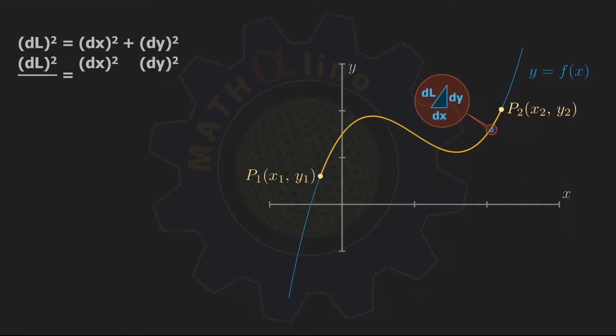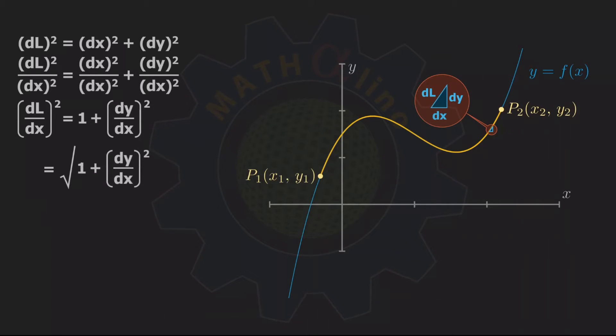Divide both sides of this equation by dx squared. And then, we can write it in this way. Note that dx squared over dx squared is equal to 1. Solve for dL. We have the square root of the quantity 1 plus dy over dx quantity raised to 2, and cross multiply dx. This is the definition of the differential length of arc dL.